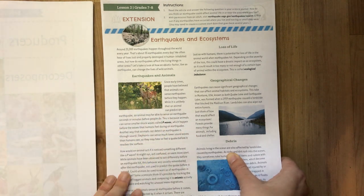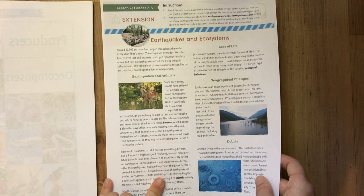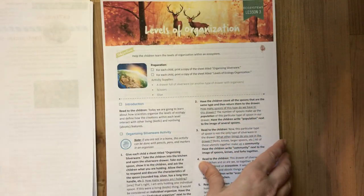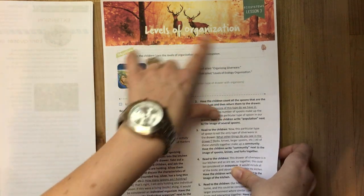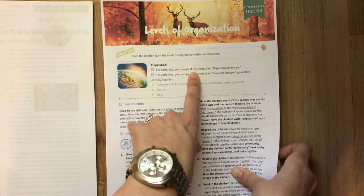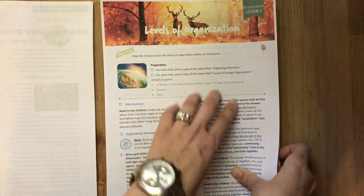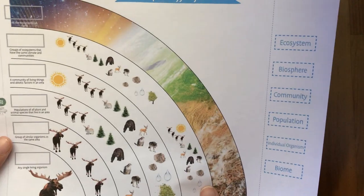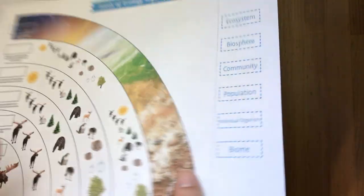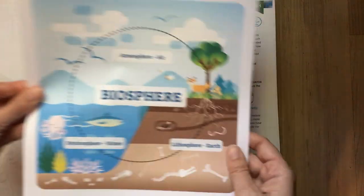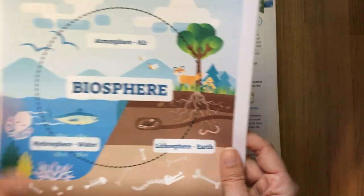The grade seven and eight extension is about earthquakes and ecosystems, with videos, research articles, and journal writing. Here's lesson three on levels of organization — look how pretty this is! It gives you your prep for each child: print copies, follow the same format with the science wall, diagrams to show as you read, and then probably having them cut and paste into their science journal. It's gorgeous — colorful, bold, fun cartoon style. I love the new direction they're taking.